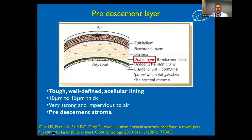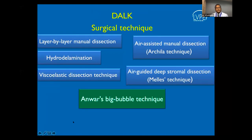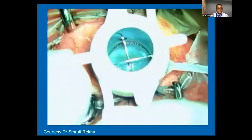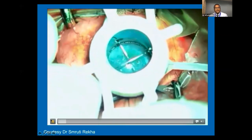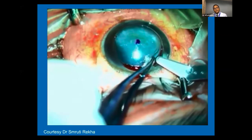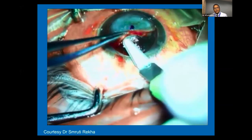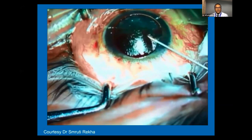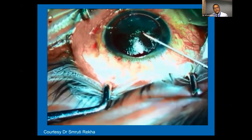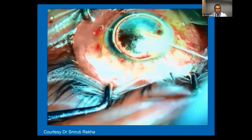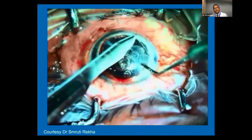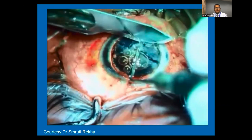Deep anterior lamellar keratoplasty (DALK) involves removing superficial layers of the corneal stroma and dissecting off all diseased tissue, achieved either by layer-by-layer dissection or a big bubble technique. As shown in the representative video, during DALK for infective keratitis, after partially dissecting into the corneal stroma, all unhealthy-appearing stroma is removed and a big bubble DALK is attempted to bare Descemet's membrane. Once the big bubble is achieved, all corneal stroma layers are dissected off before placing the graft.